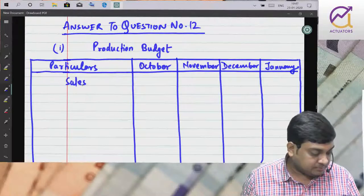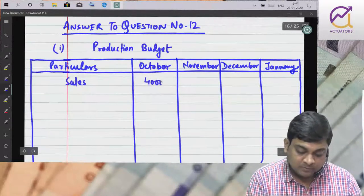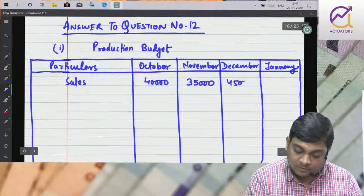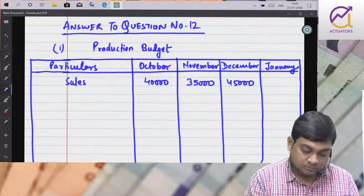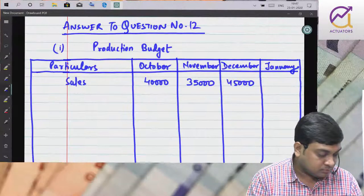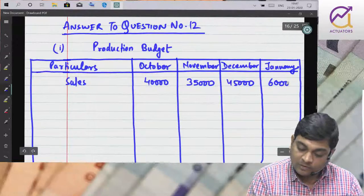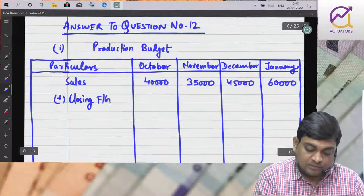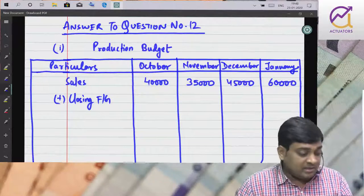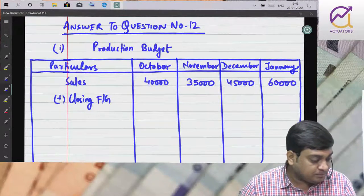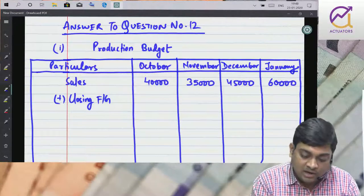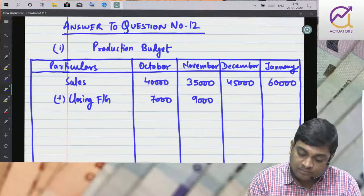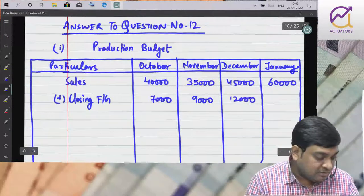Sales diya hai: October 40,000, November 35,000, December 45,000. Plus closing finished goods - haar mahine ka following month ka sales ka 20% mein hold karunga. October ka closing will be November ka 20%, November ka closing will be December ka 20%, December ka closing will be January ka 20%, and January ka closing will be 20% of February, that is 65,000 ka 20%.